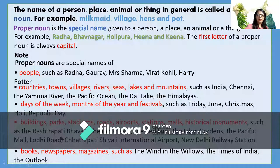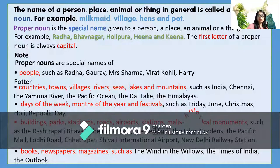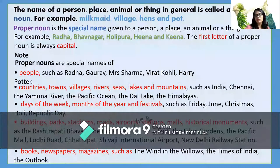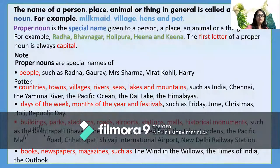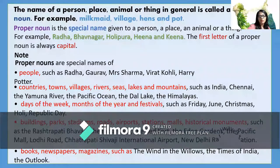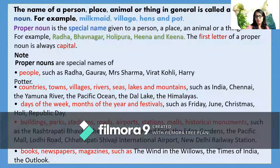Proper nouns also include specific names of buildings, parks, stadiums, roads, airports, stations, malls, and historical monuments — examples are shown on screen. So these specific names are also considered proper nouns.